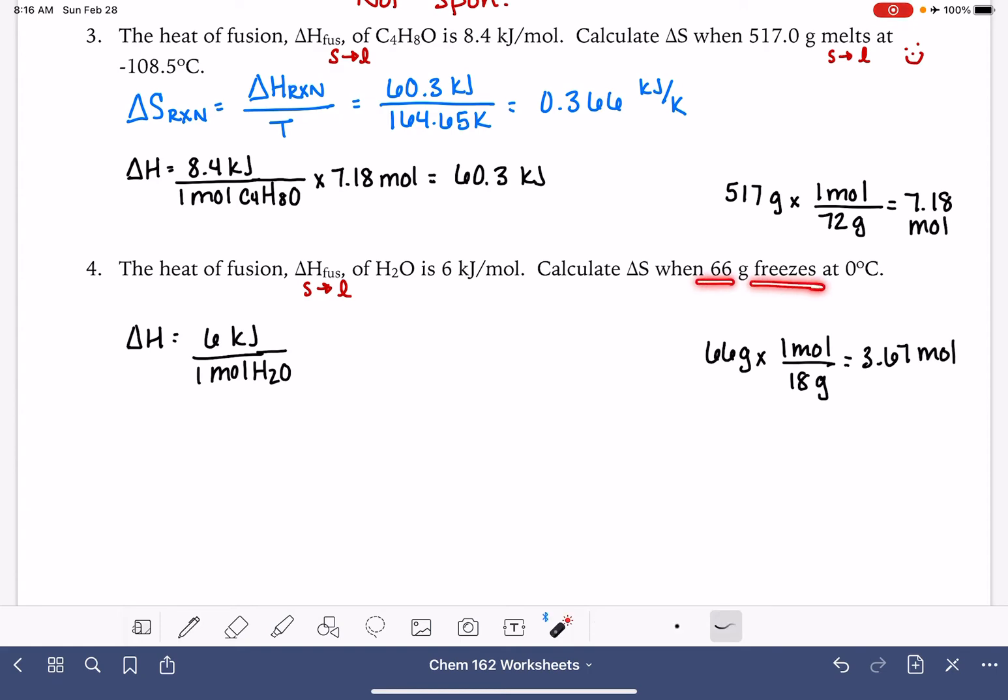66 grams of water freezes. Freezing is that's the liquid going to a solid, not a gas. So we have an inconsistency here. Our delta H is for solid to liquid, and we're being asked to calculate delta S for a liquid to solid.